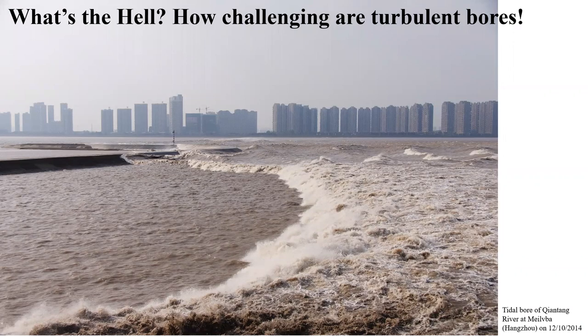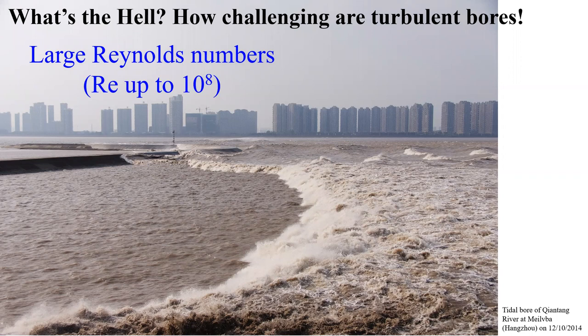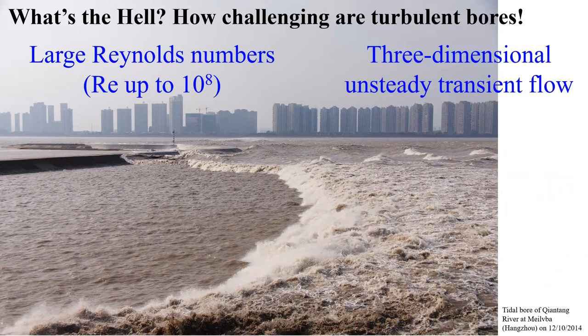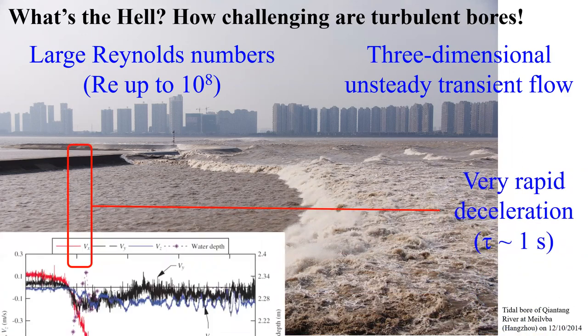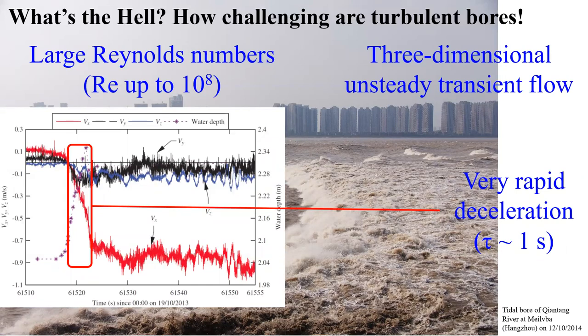What are the key challenges? For one, we are dealing with extremely turbulent flow, very often at large Reynolds numbers up to 10 to the 8. This photograph taken at the outskirt of the city of Hangzhou corresponded to a Reynolds number of about 4 times 10 to the 7. Potentially, the failure of a mega dam could lead to a dam break wave with Reynolds number well in excess of 10 to the 8. Secondly, we are dealing with an unsteady three-dimensional flow. This graph shows the variation with time of the water elevation and the three velocity components measured in the Garonne River during the passage of the tidal bore. We see a very rapid deceleration with rates of up to minus 0.3 g to minus 0.5 g within a time span of barely one second.